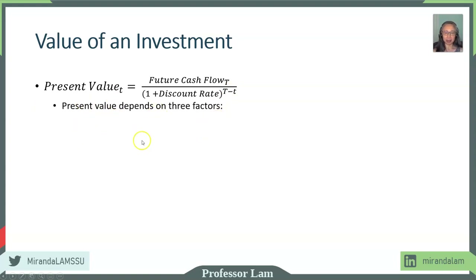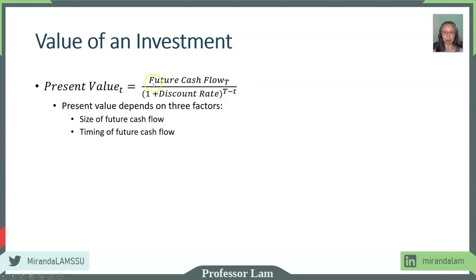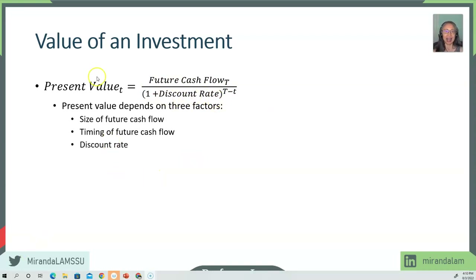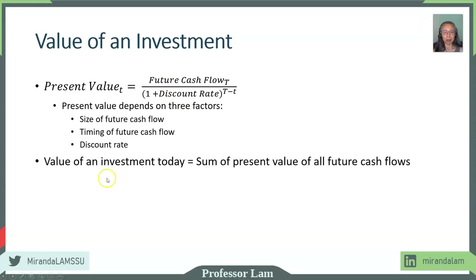Therefore, you can see that present value depends on three different factors. The first is the size of the cash flow. The second is the timing, because when the cash flow occurs will affect the exponent of the discount factor. And then, of course, the discount rate. This calculation gives us the present value of any single cash flow, which we refer to as a lump sum in finance. The value of an investment is the sum of the present value of all its future cash flows.